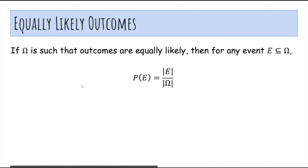In general, if omega is such that outcomes are equally likely, then for any event E, the probability of E is the size of E divided by the size of the sample space.